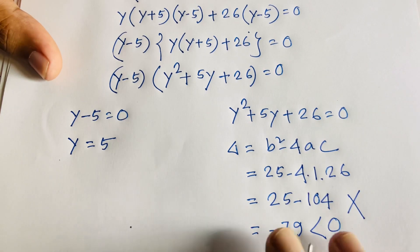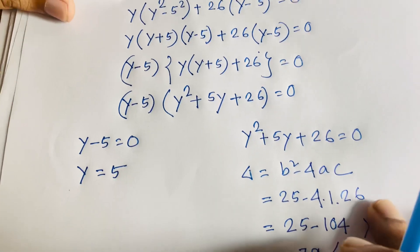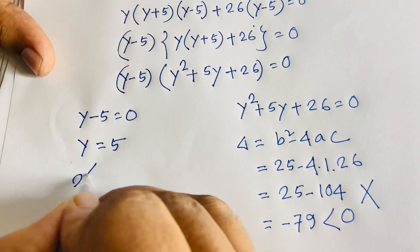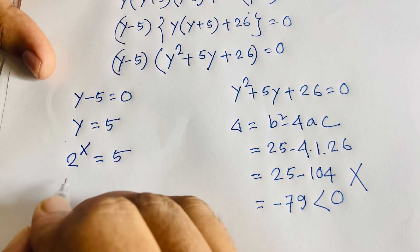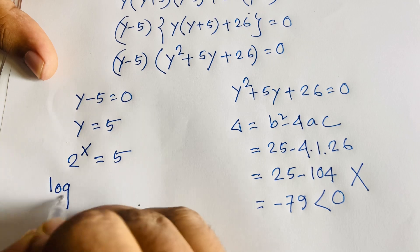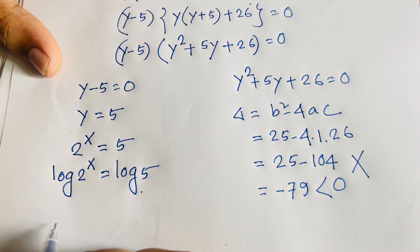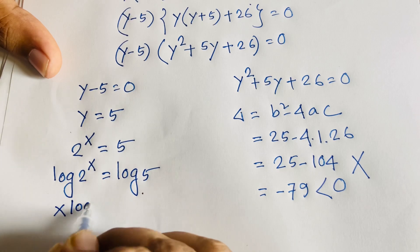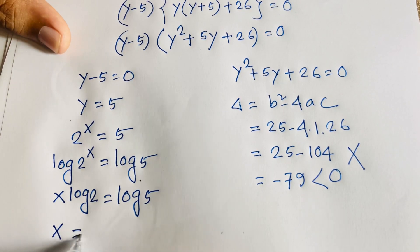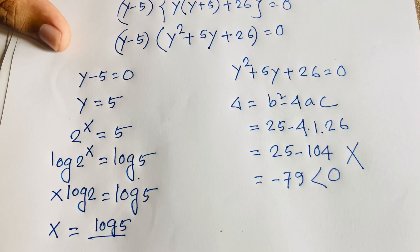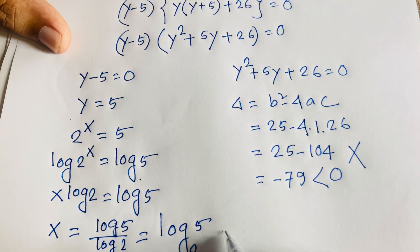From case 1, y = 5, and remember y = 2 to the power x. So 2 to the power x = 5. To solve for x, we take the natural log of both sides: x · log 2 = log 5. Dividing both sides by log 2, we get x = log 5 divided by log 2, which equals log base 2 of 5. This is our final answer.